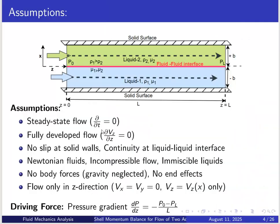Now the assumptions. First, steady state flow: d/dt of any quantity equals zero. Second, fully developed flow: dVz/dz equals zero, meaning velocity is the same at any two points along the z direction. Third, no-slip at the solid wall, so velocity is zero at the wall. There is also continuity at the liquid-liquid interface, the fluid is Newtonian and incompressible, and both liquids are immiscible so they will not mix.